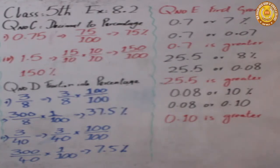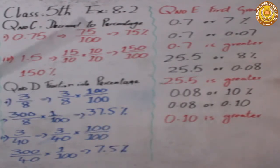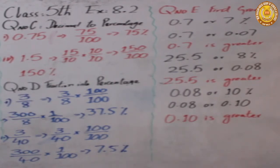Now we move to question number D — fraction to percentage. How do we convert a fraction to percentage? The first question is 3 over 8. In the previous class we learned that you can make the denominator 10, 100, or 1000. Today we will solve it using a different method so your grip on both methods improves.